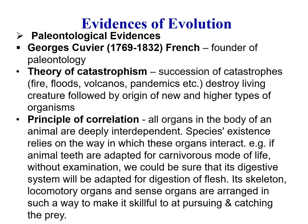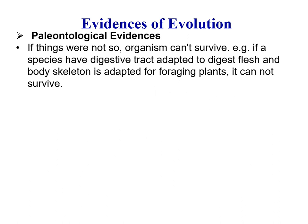Cuvier is also famous for his principle of correlations. According to him, all organs in the body of an animal are deeply interdependent, and species existence relies on the way these organs interact. For example, if an animal's teeth are adapted for a carnivorous mode of life, without examination we could be sure that its digestive system will also be adapted for digestion of flesh. So its skeleton, its locomotory organs, and its sense organs are all arranged to make it successful at pursuing and catching prey. If things were not so, the organism cannot survive.